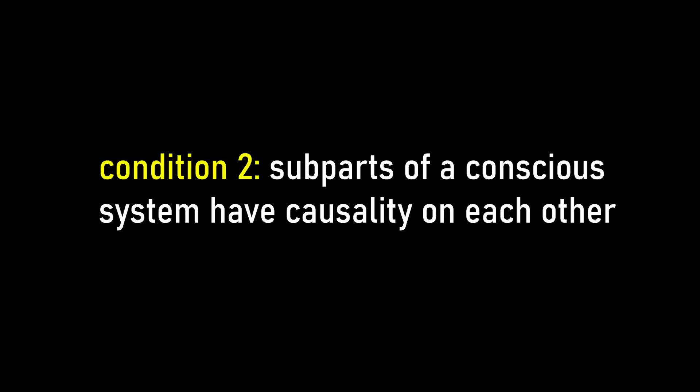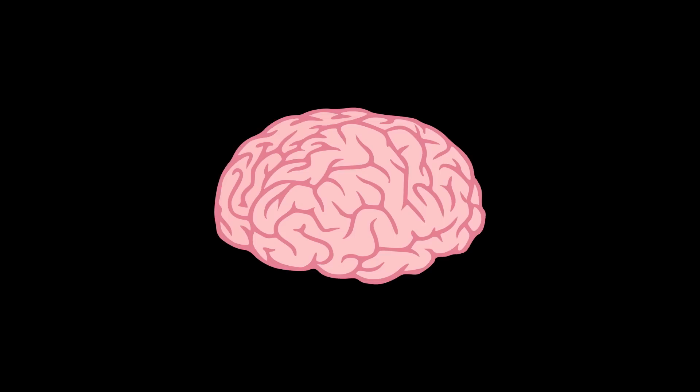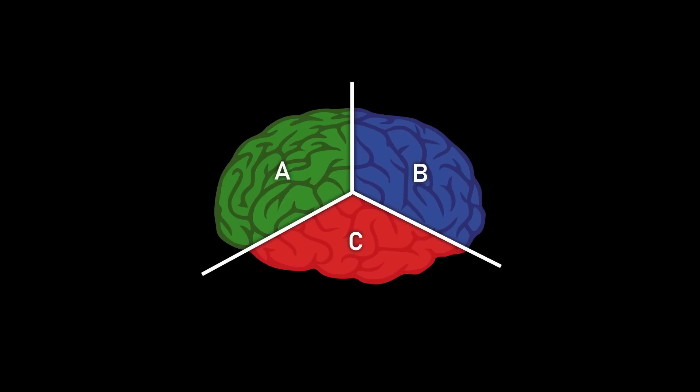Condition number two, subparts of a conscious system have causality on each other. So, if a brain was arbitrarily divided into three parts, A, B, and C, for example, then A, B, and C each have causality on themselves, A and B have causality on each other, B and C have causality on each other, and A and C have causality on each other.